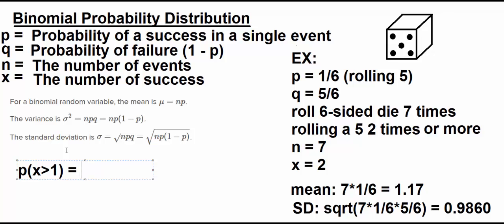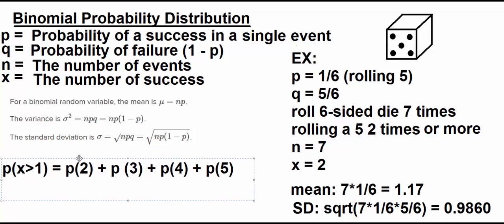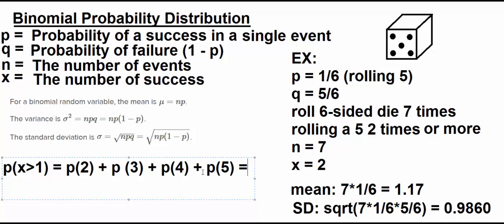So this is the same as the probability of 2 plus the probability of 3 plus the probability of 4 plus probability of 5 plus the probability of 6. Again, this is a little cumbersome to type in.